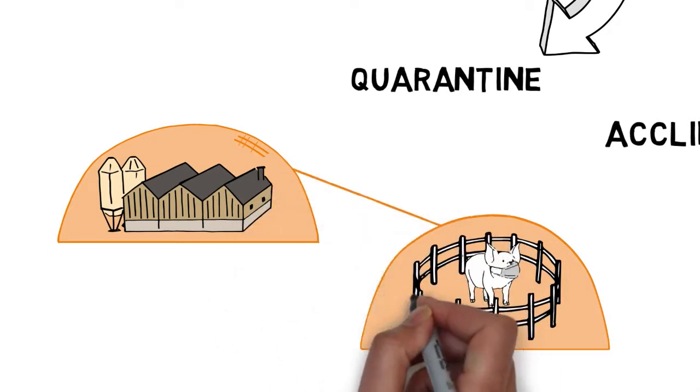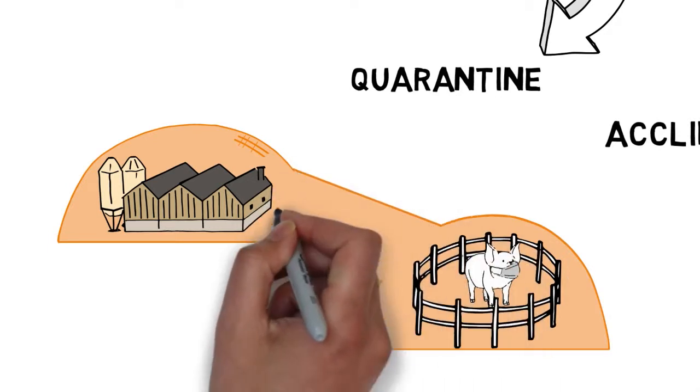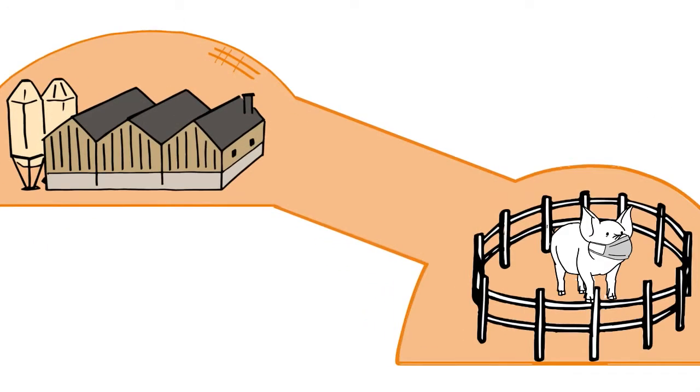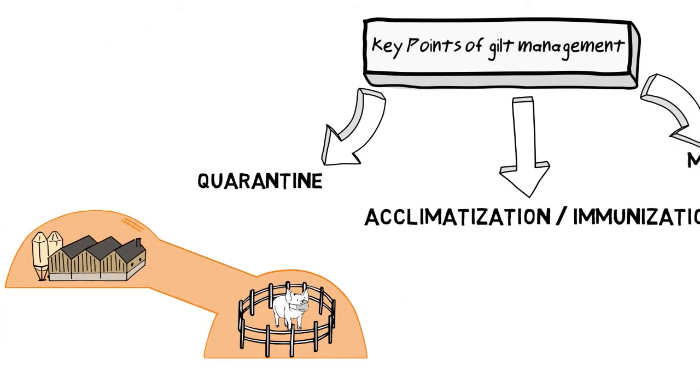During this phase, different tests are performed to make sure that pathogens don't enter. The animals' acclimatization process begins immediately afterwards, and the main objective is to induce immunity against PERS to the future breeders.